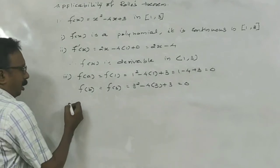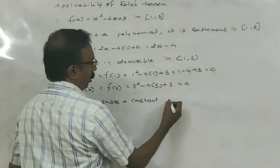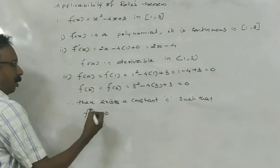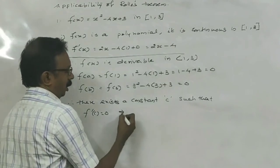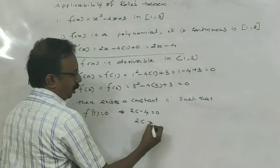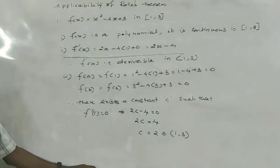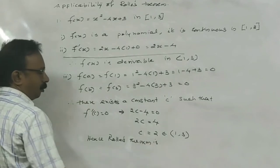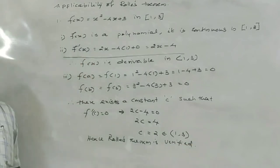Therefore there exists a constant C such that F dash C equals zero. Here F dash C is 2C minus 4 equals zero, so 2C equals 4, giving C equals 2, which lies in between 1 and 3. The constant C lies in between 1 and 3. Hence we can verify Rolle's theorem.